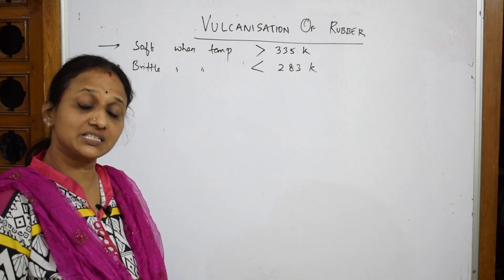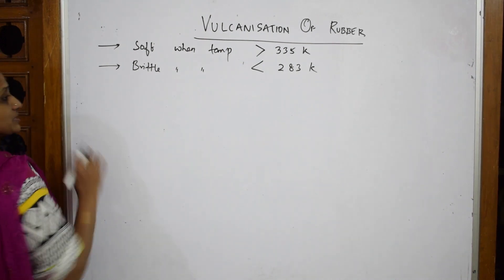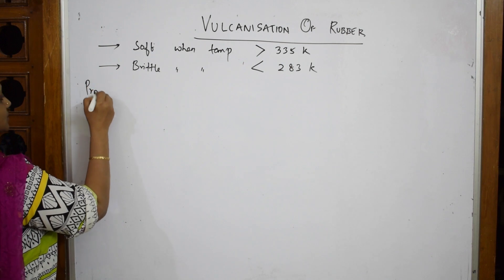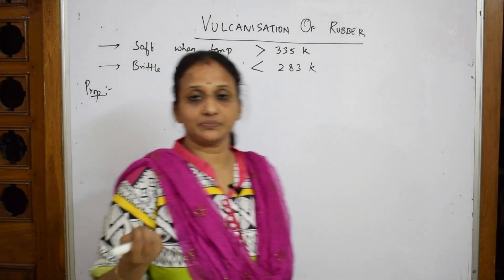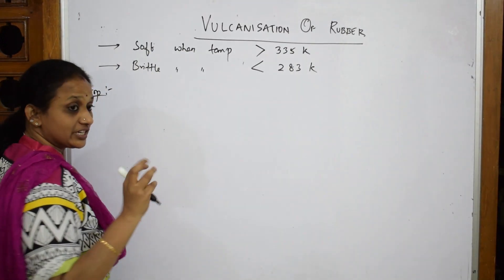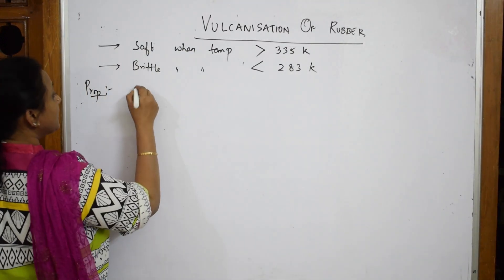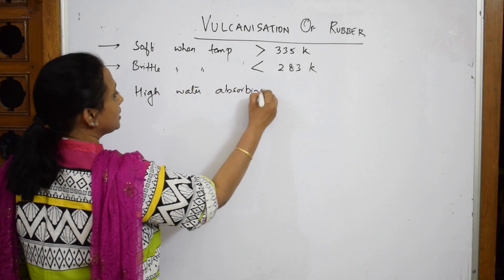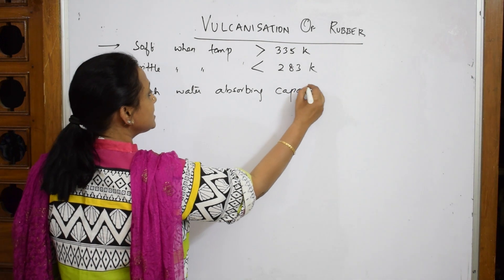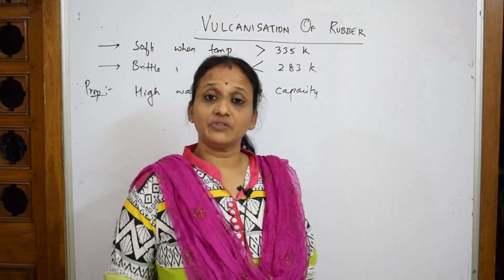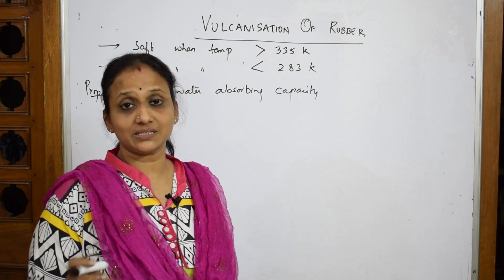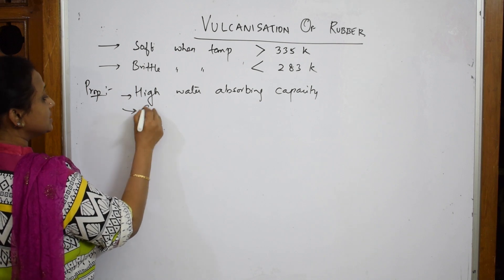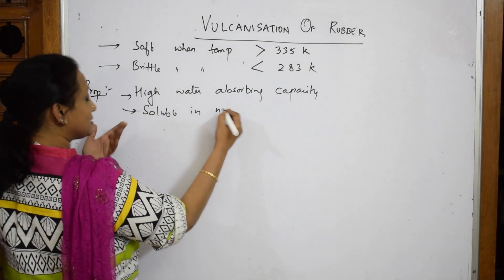Observing the properties of raw rubber: first, it has high water-absorbing capacity because it is soft in nature. Second, when we look at its durability, rubber dissolves in nonpolar solvents like benzene and alcohol.